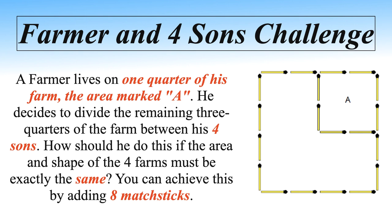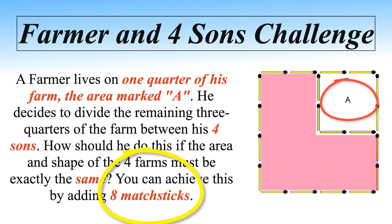A farmer lives on one quarter of his farm, the area marked A. He decides to divide the remaining three quarters of the farm between his four sons. How should he do this if the area and shape of the four farms must be exactly the same? You can achieve this by adding eight matchsticks.